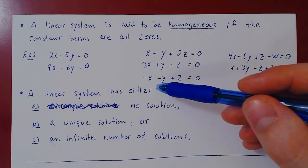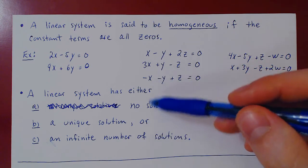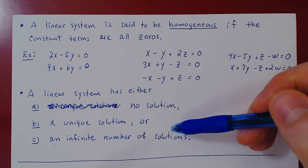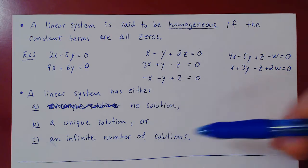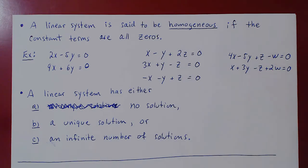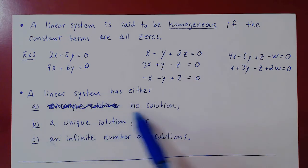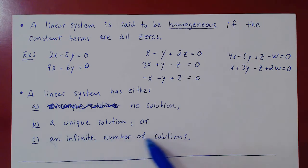Here is a theorem we will prove later on, but we can look at it from a heuristic point of view. If you go over all the examples we've looked at of linear systems, we always had either no solution, a unique solution, or an infinite number of solutions. You may ask: is this just sheer luck, or is it always true? The answer is: it is always true. A linear system has either no solution, a unique solution, or an infinite number of solutions.